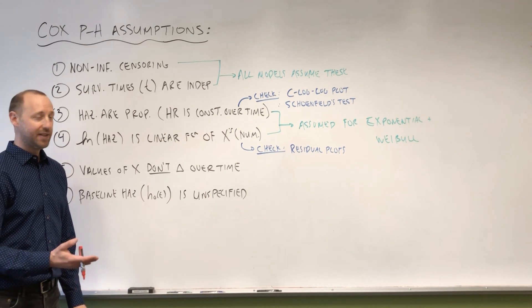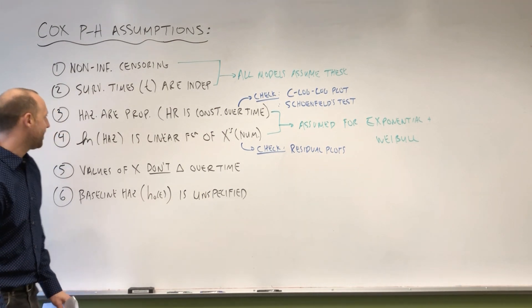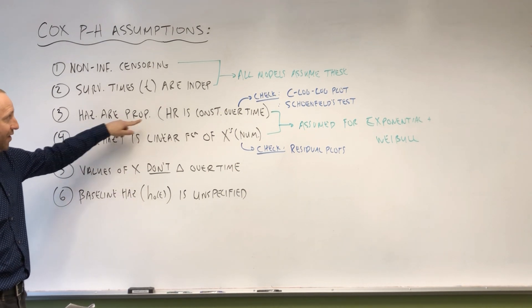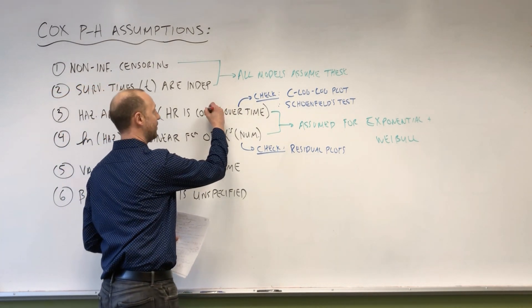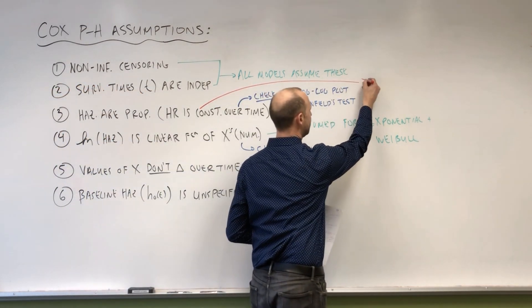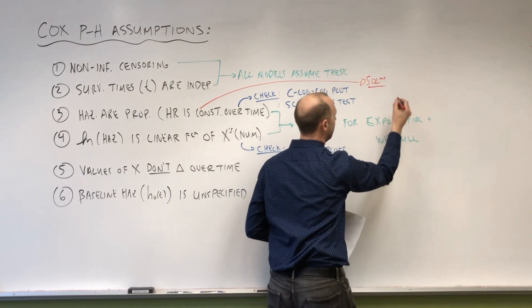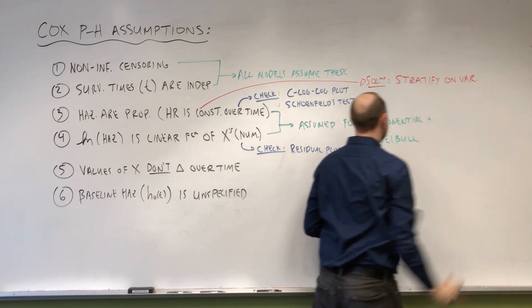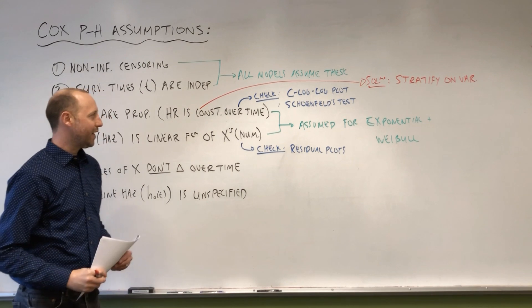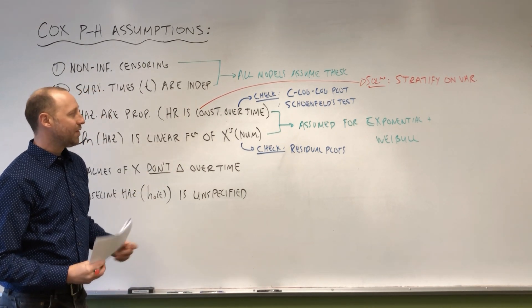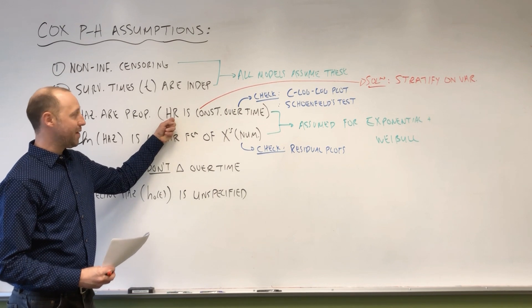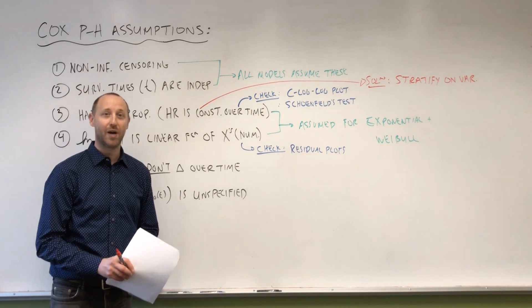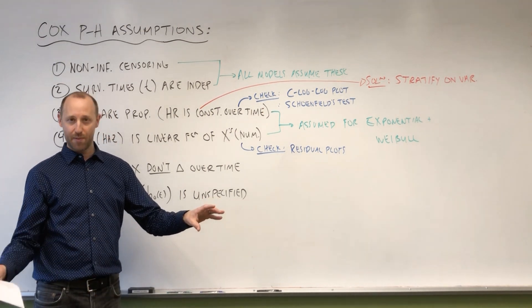So let me just quickly again mention and name some of the solutions if some of these assumptions are violated. And we'll look at implementing some of them as we progress. So if hazards are not proportional over time, if the hazard ratio is not constant, one of the solutions is to stratify on the variable. And we're going to expand on this later, so I'm just going to say it short for now.